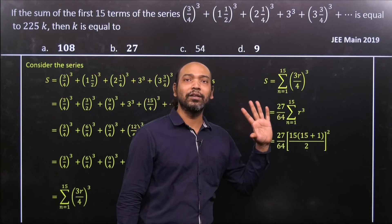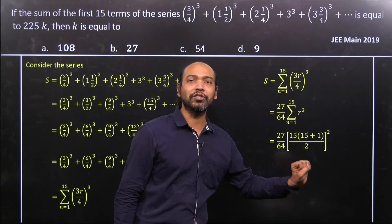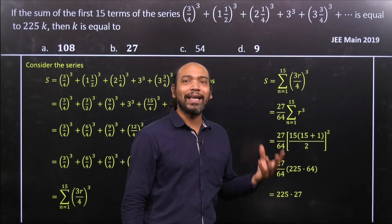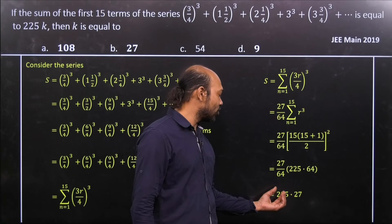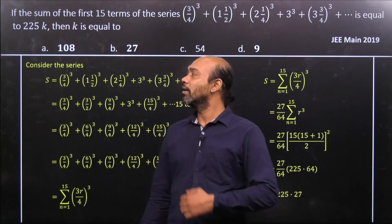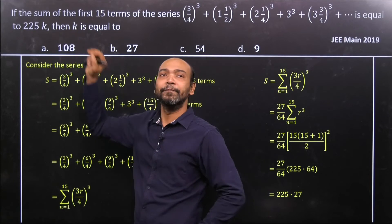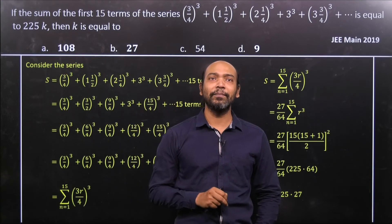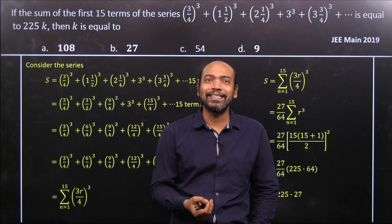Now this is a simple calculation we have to do. If we go ahead step by step, we will get that the final answer is 225 times 27. You can multiply that but here it's not required because it's 225k. Therefore we can easily understand that the value of k is 27.